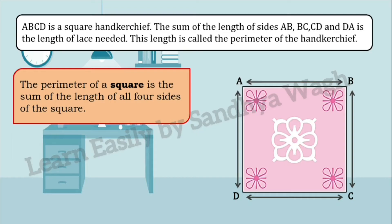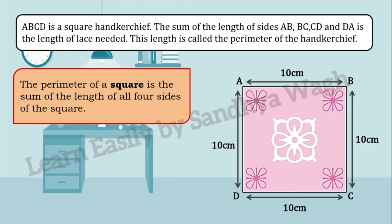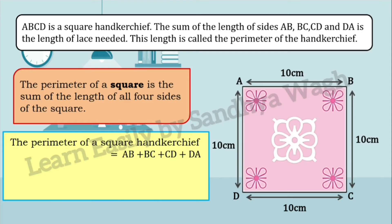The perimeter of a square is the sum of the length of all 4 sides of the square. A, B, C, D is a square-shaped handkerchief. Perimeter of handkerchief equals AB plus BC plus CD plus DA. So 10 plus 10 plus 10 plus 10 is equal to 40 cm.